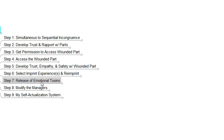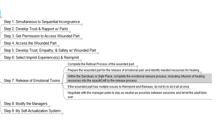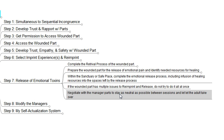Once we've done step six and completed the re-imprinting, we move to step seven — a process of retrieving the wounded part from the harmful or toxic environment and moving it into a safe sanctuary that we create in the present moment. We prepare that part for the release of emotional toxins, identify any necessary resources for healing, and then within the sanctuary complete an emotional release process, including infusion of healing resources into the spaces left by the release. The wounded part may have multiple issues; we try to work on a few at a time. We negotiate with the managing parts to stay as neutral as possible between sessions and let the adult take over rather than lapsing into old behaviors while the healing process continues.